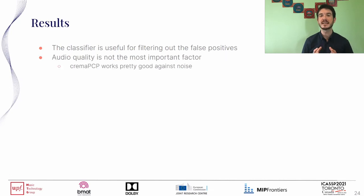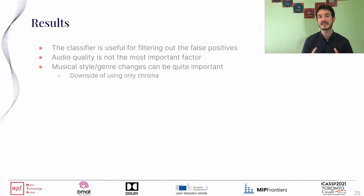We also saw that audio quality is not the most important factor on system performance. The systems perform more or less the same with different audio qualities, and we think that chroma PCP is fairly robust to noise and audio quality. Another finding concerns musical genres and styles: we saw large variations between performance on concerts from different genres, and we think this is due to our chroma-based input representation, which can be difficult for certain genres.